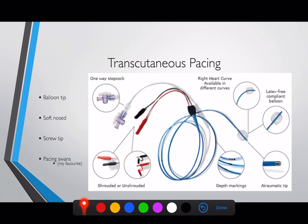In terms of the different types of transvenous pacing wires: there's the balloon-tipped wire, which is what you'll commonly see in ICU — the benefit being you don't need fluoroscopy. There's the soft-nosed wire, which is often what we put in temporarily. And the screw-tipped wire, which has a little screw on the end that bores into the myocardium and anchors in place — that's usually what cardiologists use for more permanent systems.